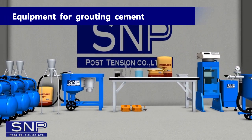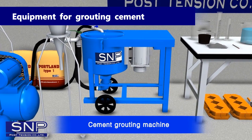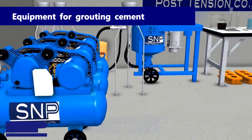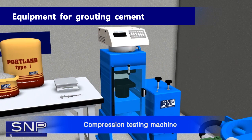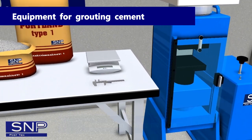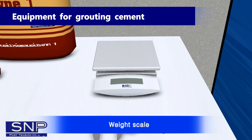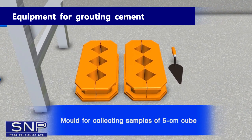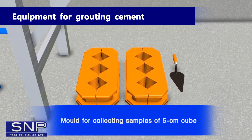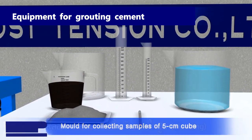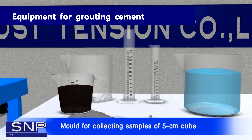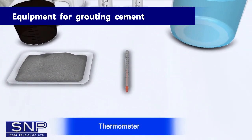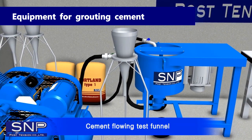Equipment for Grouting Cement: Cement Grouting Machine, Air Pump, Compression Testing Machine, Weight Scale, Vernier for Measuring Cement Samples, Mold for Collecting Samples of 5cm, Bleeding Testing Tube, Beaker for Measuring Liquid, Thermometer, and Cement Flowing Test Funnel.